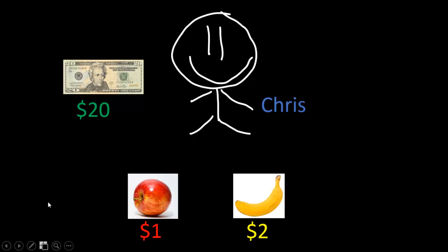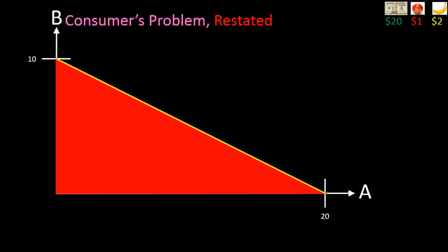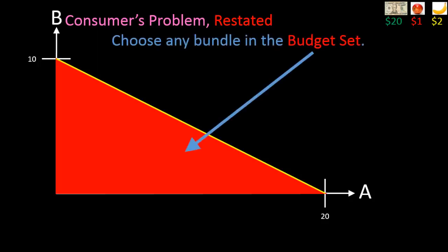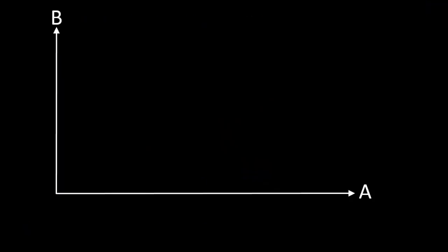Let's now return to our old friend Chris, whom we recall had the problem of deciding how many apples and how many bananas to buy. Recall also that we reformulated the consumer's problem as that of choosing some feasible consumption bundle — some particular point in the red shaded area shown here, which we also called the budget set. But this set is infinitely big, so how are we going to go about choosing? This is where preferences come into play.